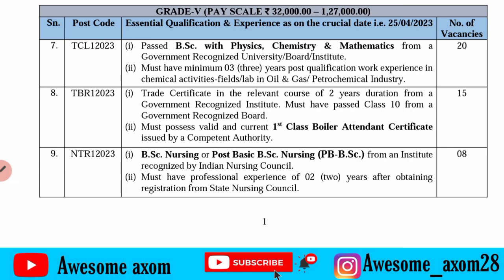You have a pay scale of 32,000 plus 1,27,000 salary and you must have the class boiler attendant certificate. You must be a class 10 pass candidate with the relevant post qualifications and vacancies.